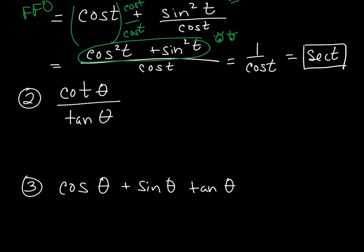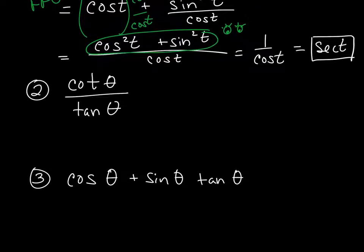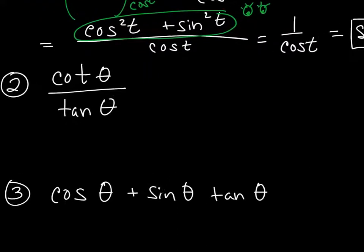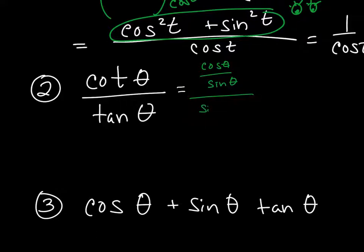We're going to use two things here. The first big idea is to change and write both of these in terms of sine and cosine. When I do that, the cotangent is the same thing as cosine of theta over sine of theta, and the tangent is sine of theta over cosine of theta. This is my fraction face-off — I need to do something with this.